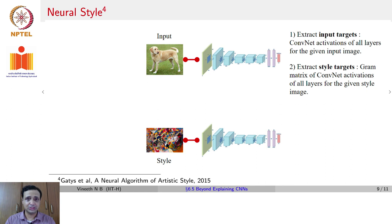Then you also extract what are known as style targets. You give the style image to the same neural network. The style image could be a painting by Picasso or Van Gogh or something like that, you give that as input to the same neural network. But this time, you do not get the activations of this input at different layers. Instead, you get what are known as gram matrices of convolutional activations of all layers.